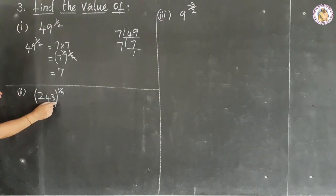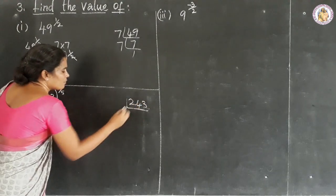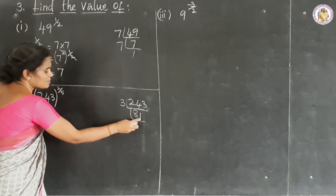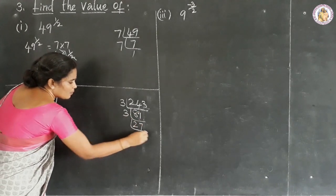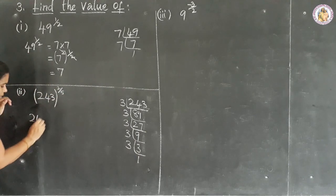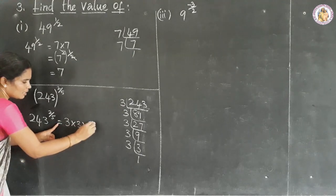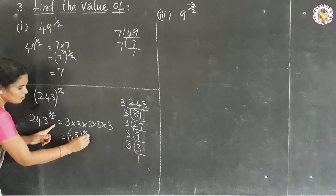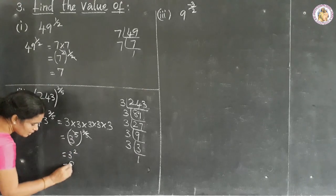Question number 2: 243 to the power of 2 by 5. Finding factors of 243 — last digit is 3, so we divide by 3 repeatedly: 3 to the power of 5. So 243 to the power of 2 by 5 equals (3 to the power of 5) to the power of 2 by 5. The 5s cancel, leaving 3 to the power of 2. So 3 × 3 equals 9.